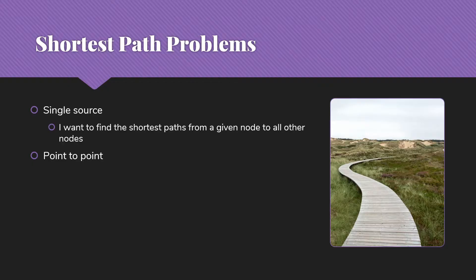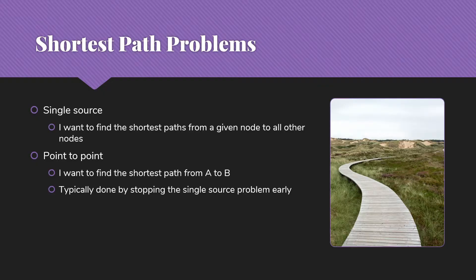Then we have the point-to-point problem, which is probably the one that we most often think of — finding the shortest path from vertex A to vertex B. However, this is typically not done as a standalone thing. It is more often done by stopping the single source problem early when we've located the desired destination, because we can't guarantee finding the shortest path unless we allow ourselves to be branching out and looking in multiple directions.